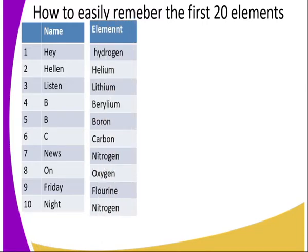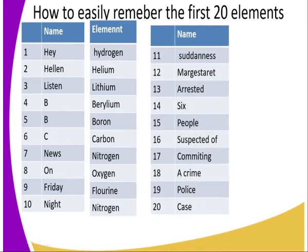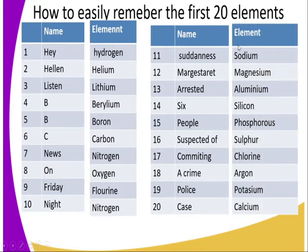In the mnemonic: 'Hey Helen' stands for hydrogen and helium; 'recent' for lithium and beryllium; B for boron; C for carbon; 'news' for nitrogen; 'on' for oxygen; 'Friday night' for fluorine and neon. Then the second mnemonic — 'A Sudanese magistrate arrested six people suspected of committing a crime and it became a police case' — represents sodium, magnesium, aluminium, silicon, phosphorus, sulfur, chlorine, argon, potassium, and calcium.